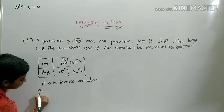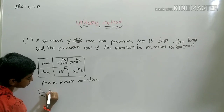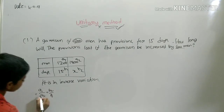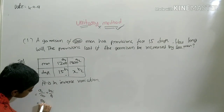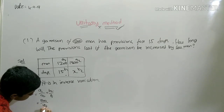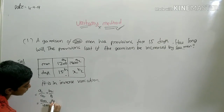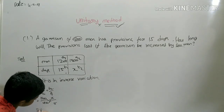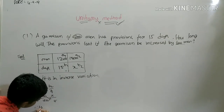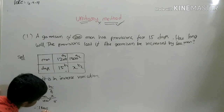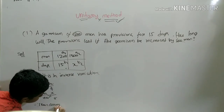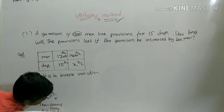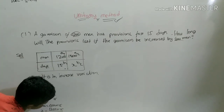This is inverse variation. The inverse variation formula is A1 by A2 is equal to B2 by B1. So A1 is 1200, A2 is 1800, B1 is 15, and B2 is X. That gives us 1200 by 1800 is equal to X by 15.